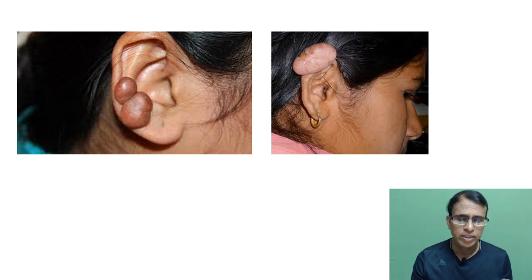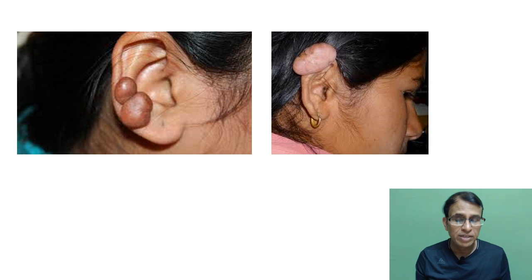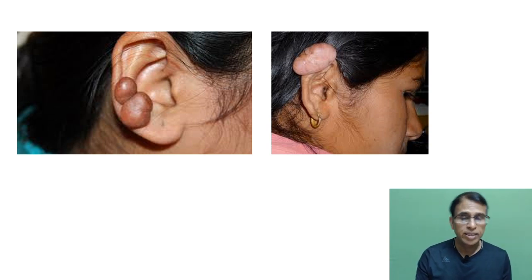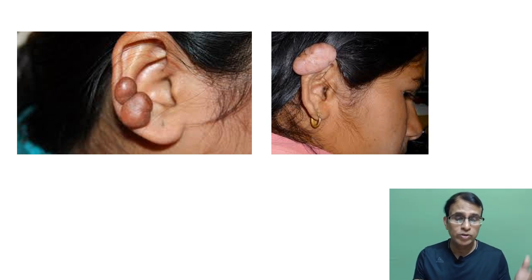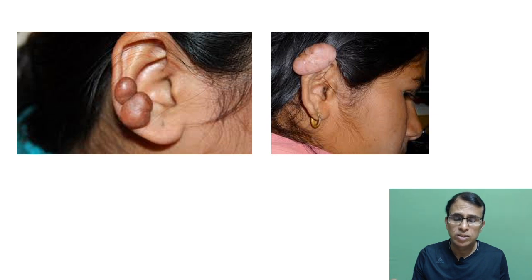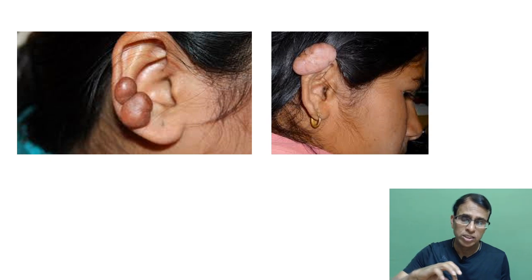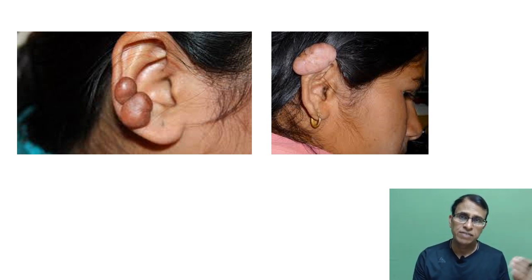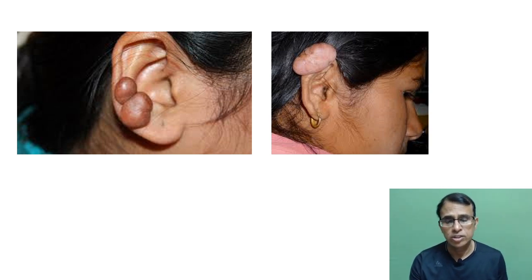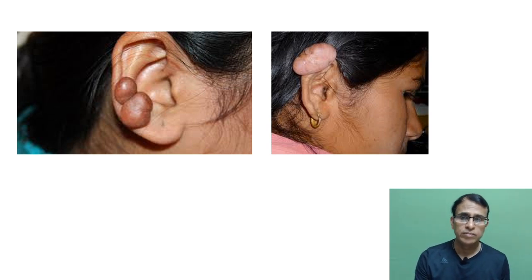Keloids are usually asymptomatic — mostly a cosmetic problem, though very large ones may cause discomfort from compression while sleeping. Surgical excision is required, but surgery itself is trauma, which can trigger regrowth of the keloid. To prevent regrowth, steroid injections are given at the root of the keloid over multiple sittings before surgery, then the keloid is excised and the area repaired nicely, followed by post-excision steroid injections to prevent recurrence.